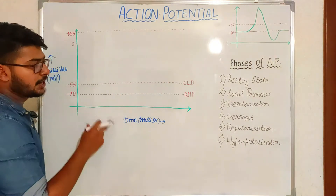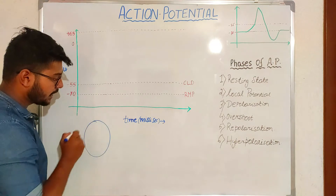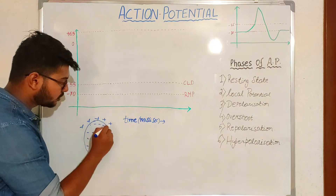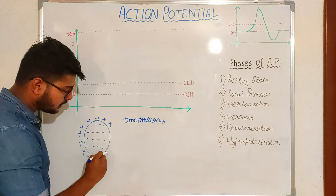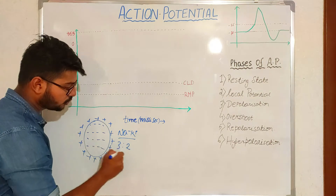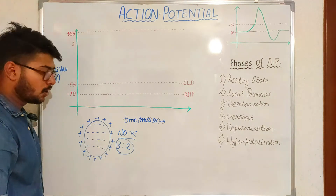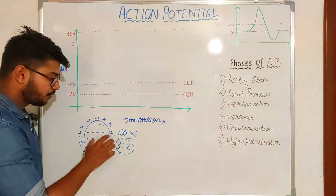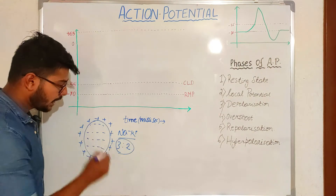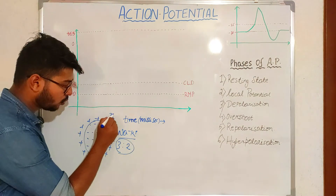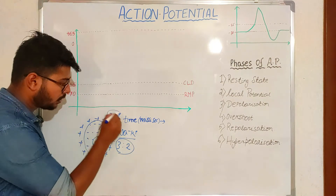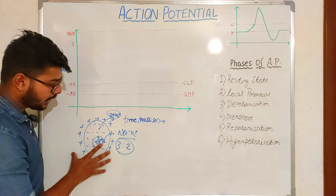The first phase of the action potential is the resting state. It means the neuron is positioned in a resting state. In a resting state, it has negative charges inside and positive charges outside of the membrane, due to the sodium-potassium pump — a 3-to-2 ratio. The sodium-potassium pump takes three sodium ions from inside and throws them outside, and takes two potassium ions to the inside.